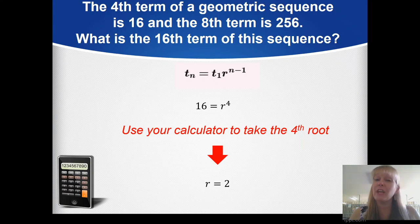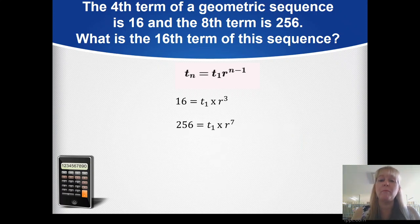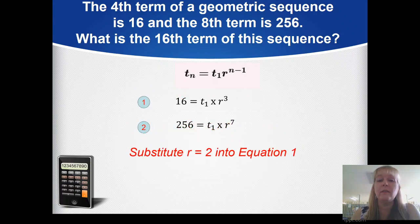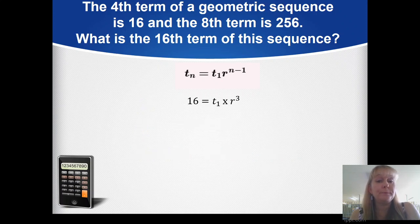I can now substitute r equals 2 back into equation 1 to find the first term. So 16 equals t₁ times 2³. Since 2³ equals 8, I can rearrange: 16 divided by 8 equals 2, so t₁ equals 2. Now I have the key information: t₁ equals 2 and r equals 2. Now I can find the sixteenth term.